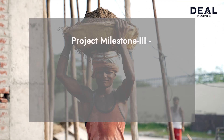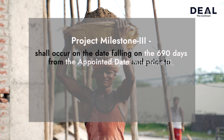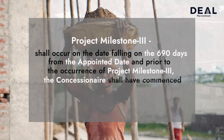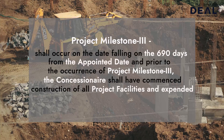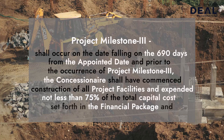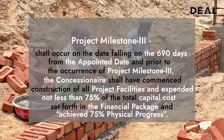Project Milestone 3 shall occur on the date falling on the 690th day from the appointed date. Prior to the occurrence of Project Milestone 3, the concessionaire shall have commenced construction of all project facilities and expended not less than 75% of the total capital cost set forth in the financial package, and also achieved 75% of physical progress.